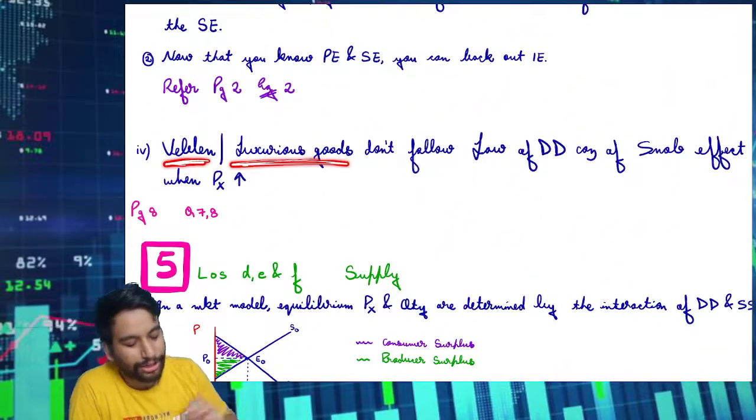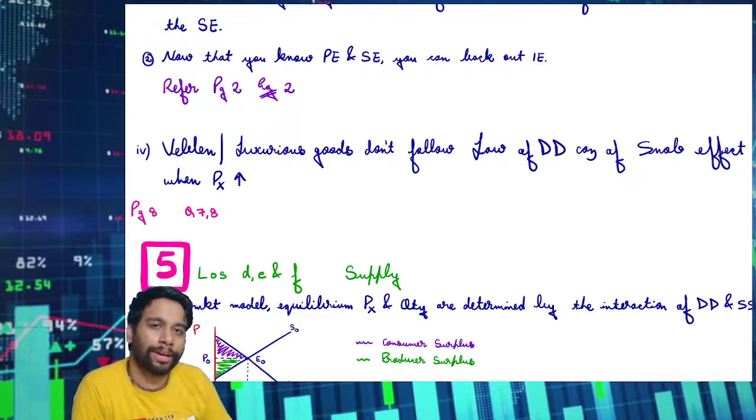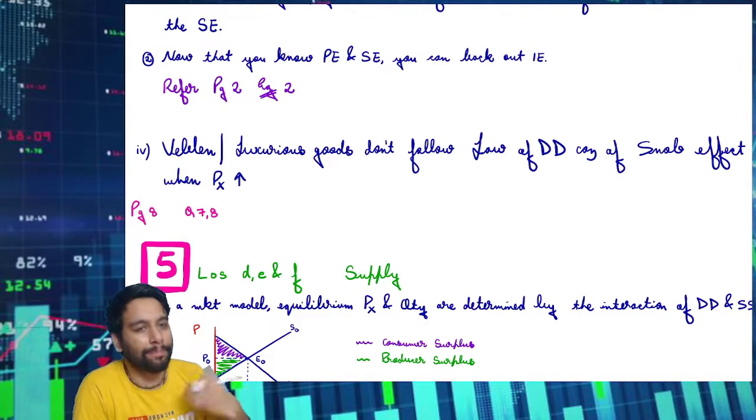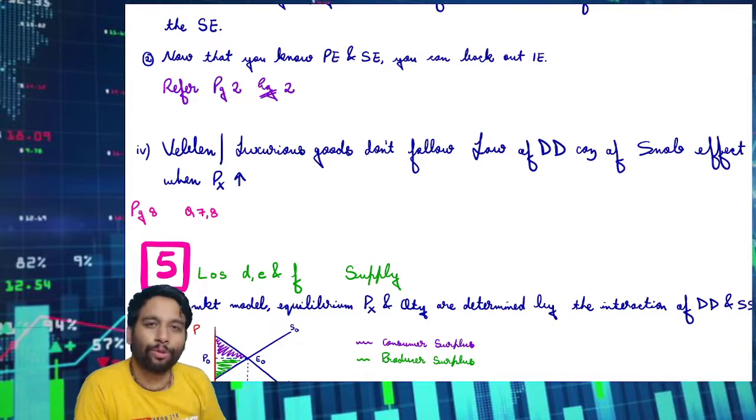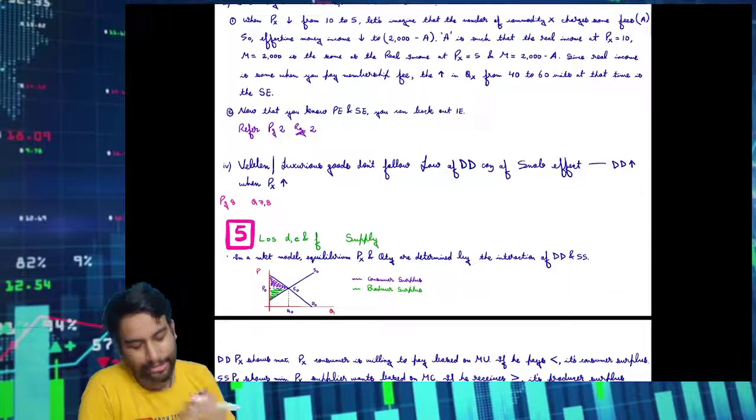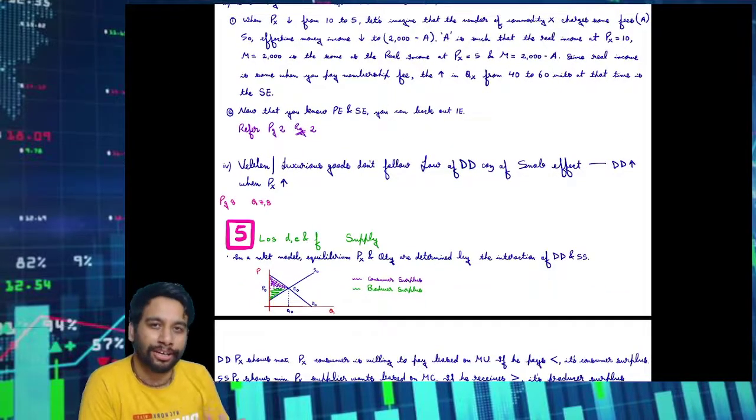For Veblen goods or luxurious goods, the law of demand acts differently. If there is a price increase for gold or iPhone, which are luxury items, then the demand may increase because they are seen as luxury items. If there is a diamond ring and the price increases, people may want it more.